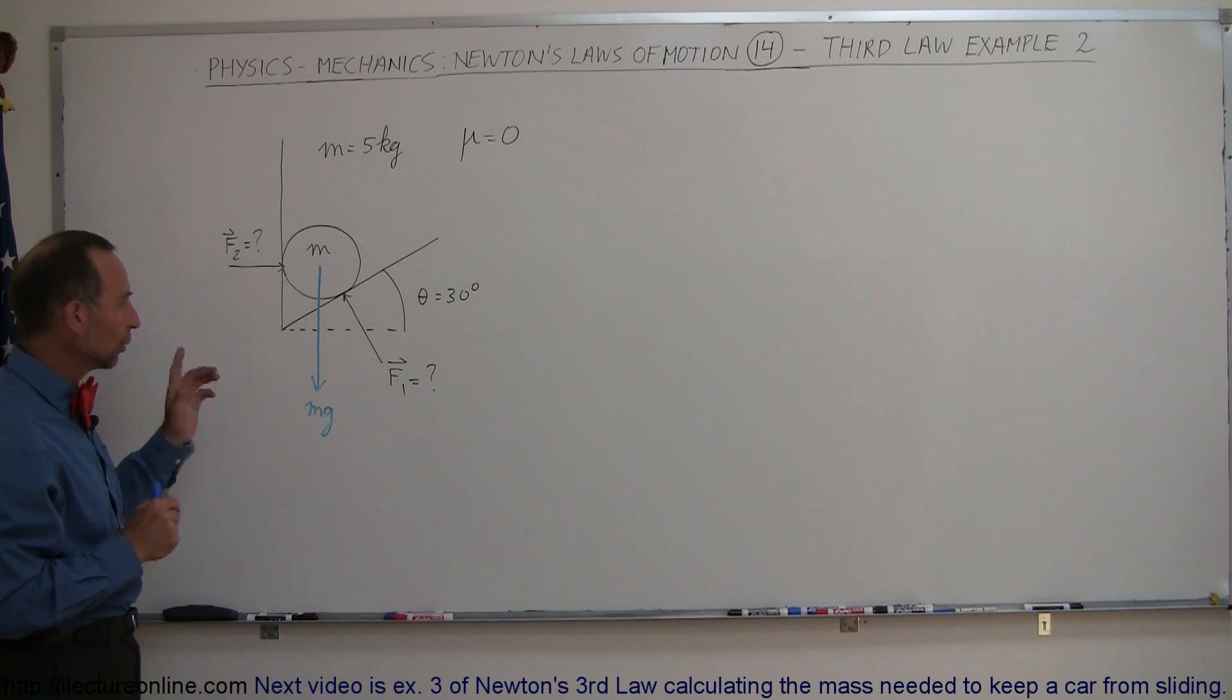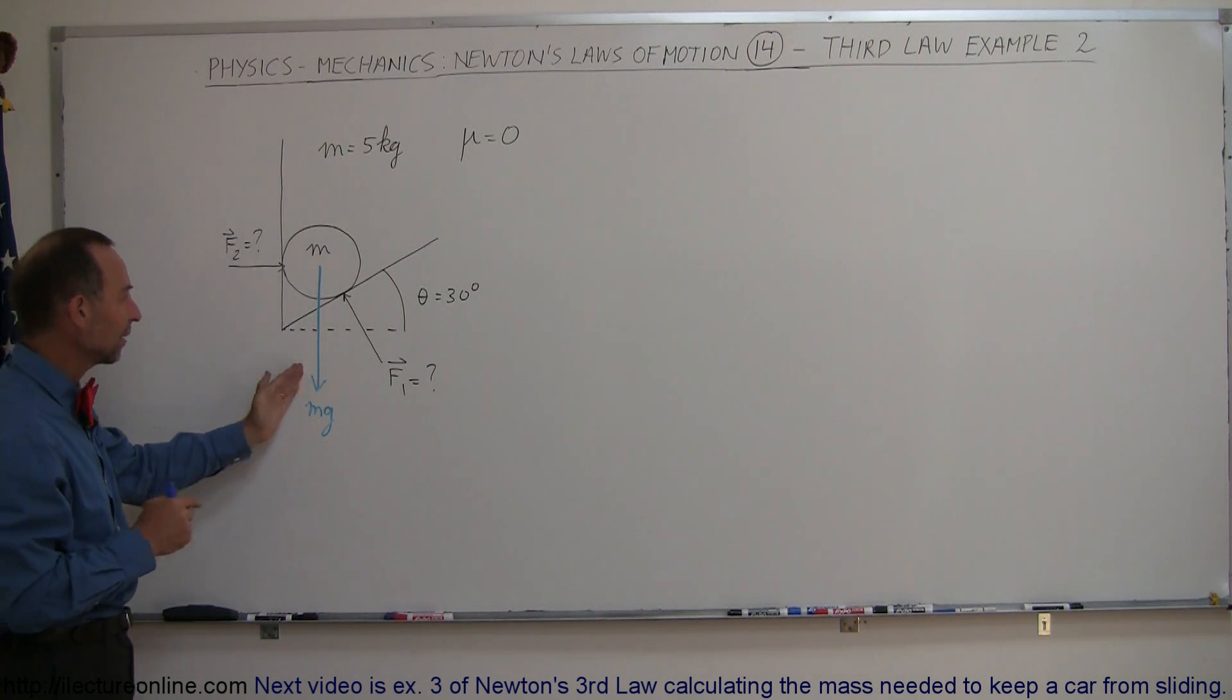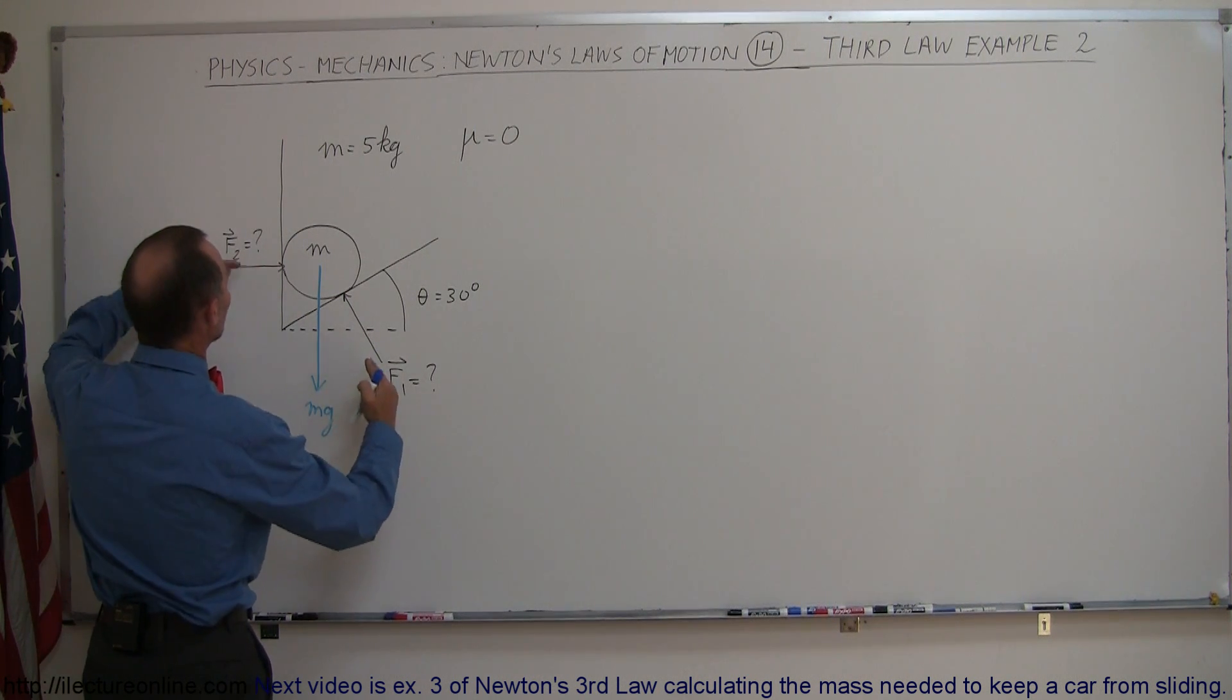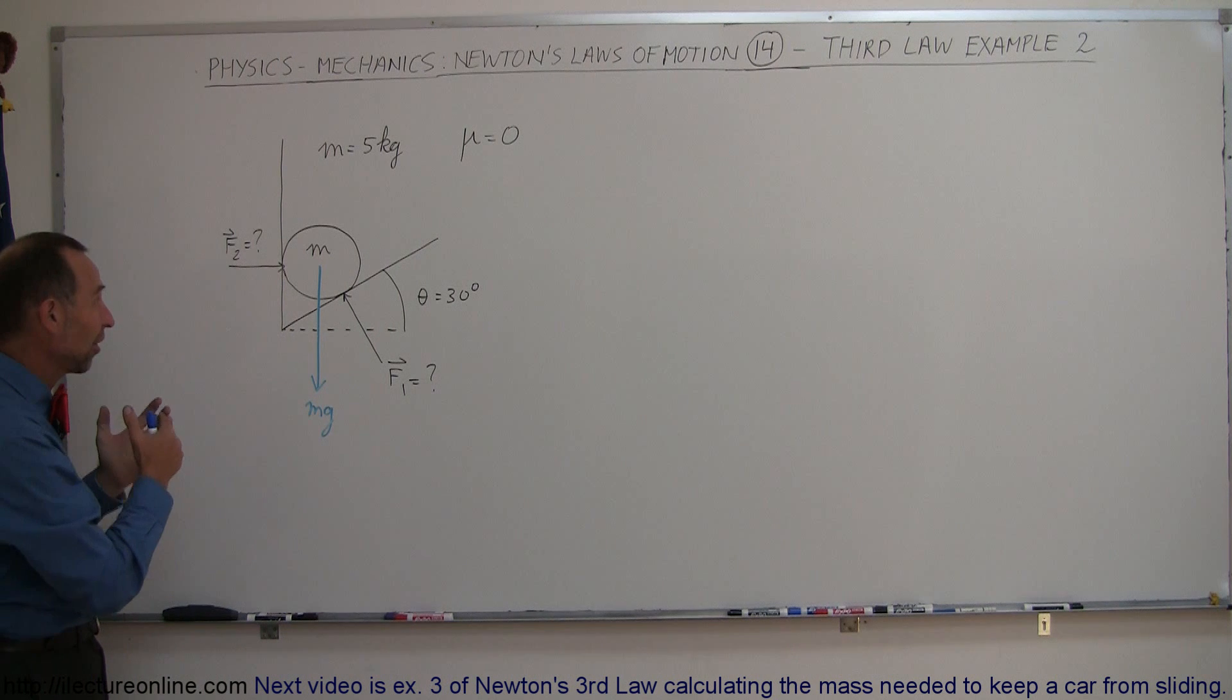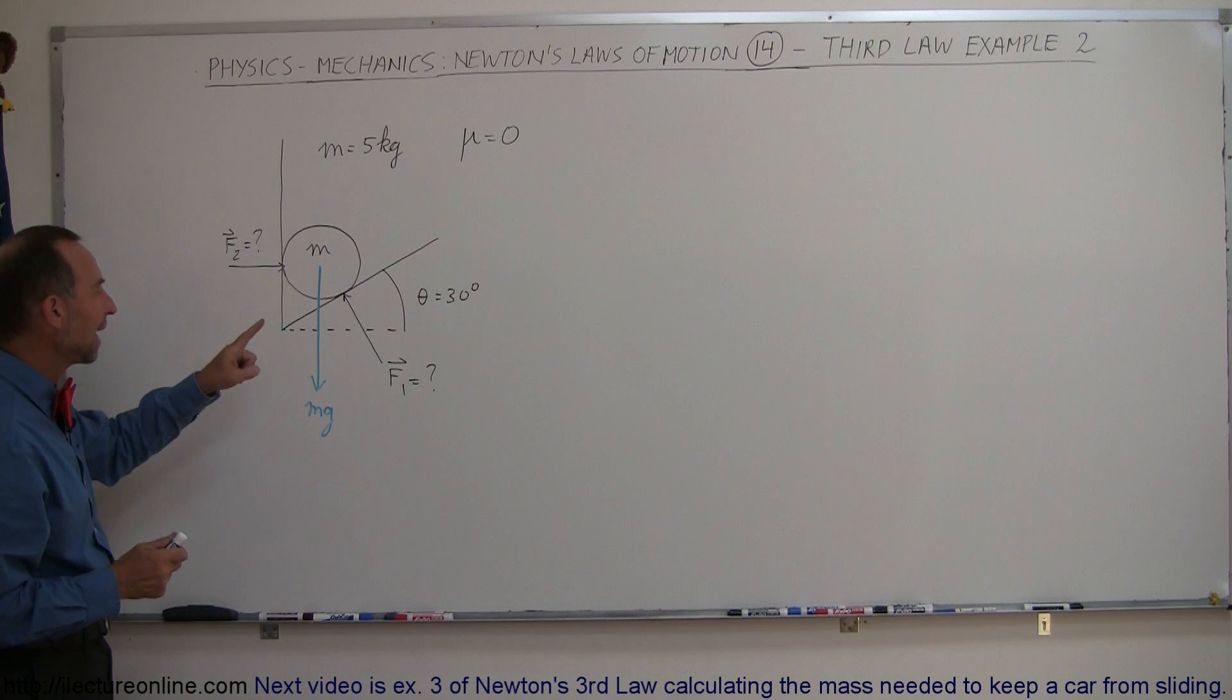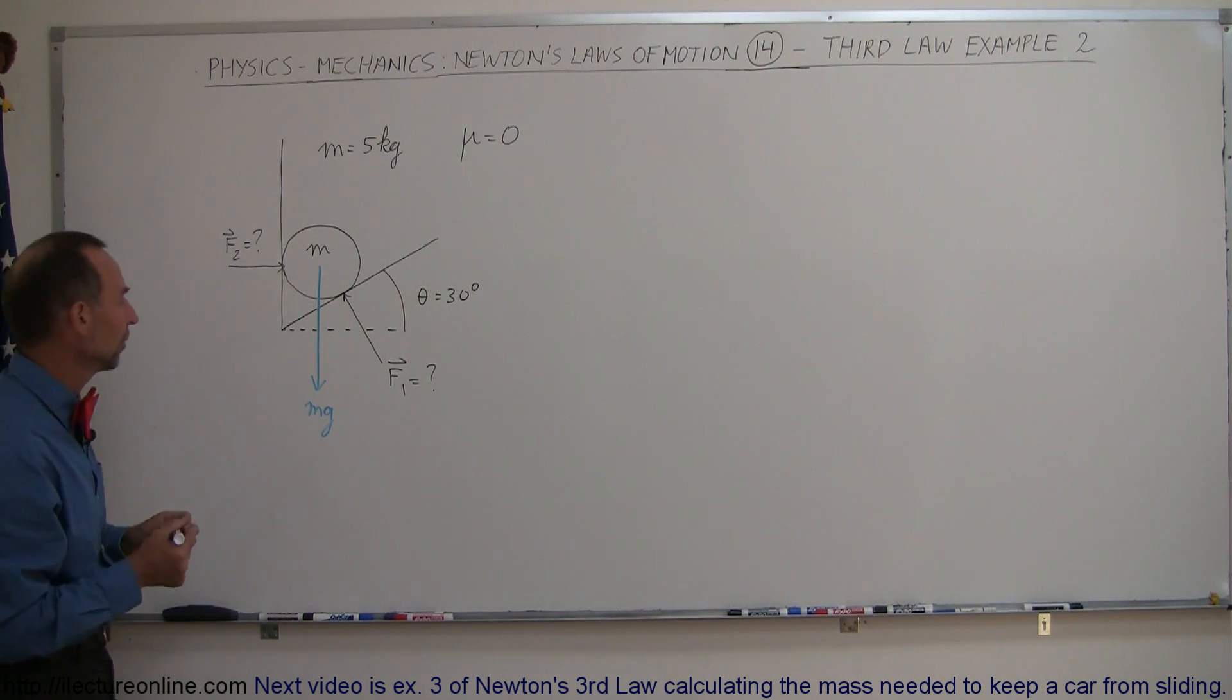The only forces acting on this ball are the force of gravity acting downward and the forces of the two sides of the wedge pushing back. Those three forces must add up to zero because there's no acceleration here, which means we can sum these up graphically and they should add up to zero.